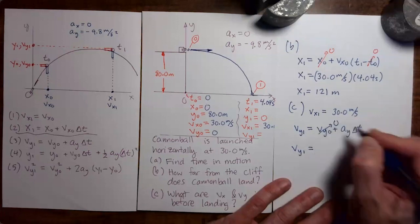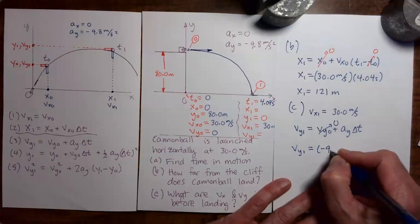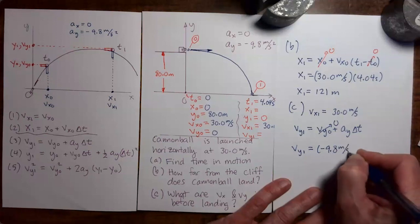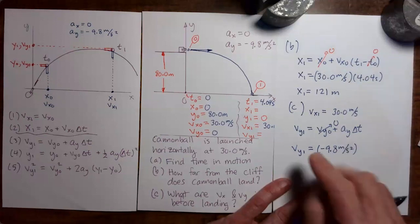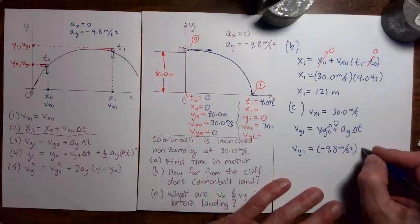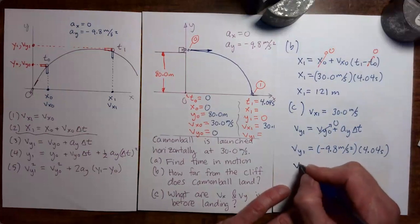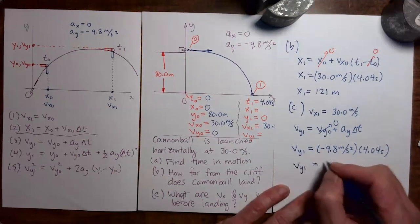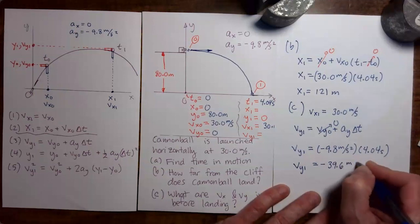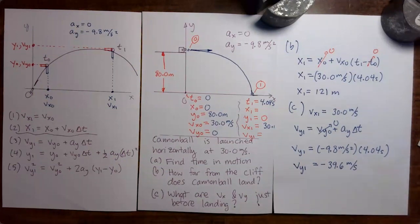Vy0 is zero, minus 9.8 meters per second squared. Delta t would be t1 minus t0, which is 4.04 seconds. And we get vy1 equals minus 39.6 meters per second. And there we have completed our first example problem involving a free-falling projectile moving in two dimensions.